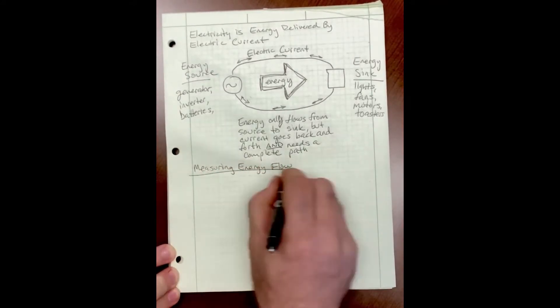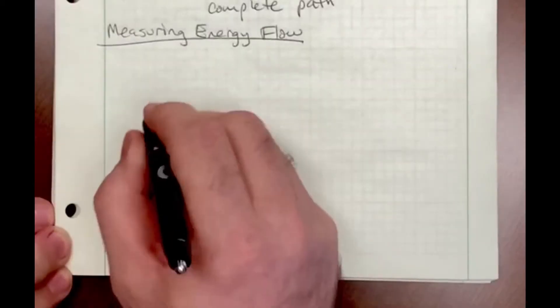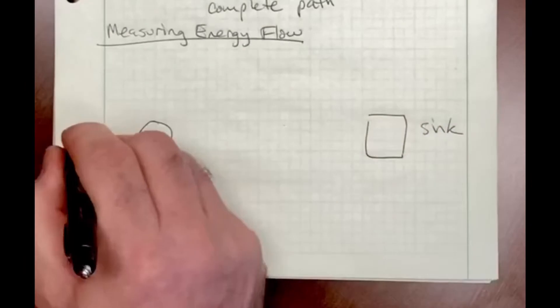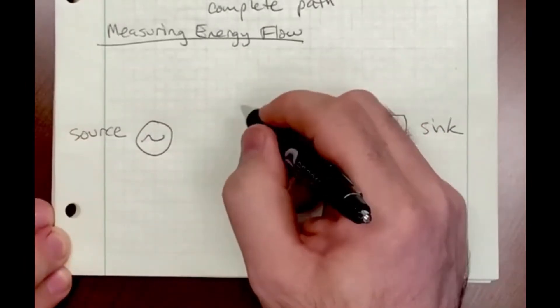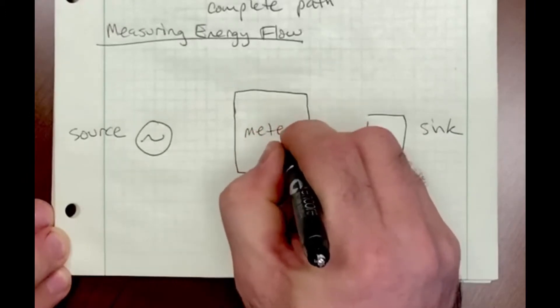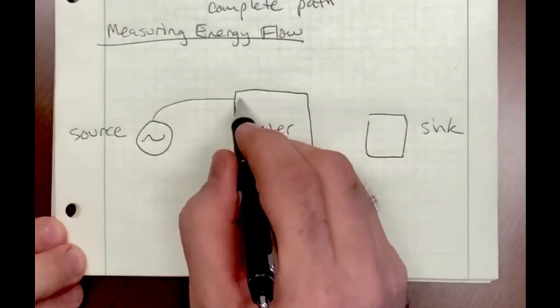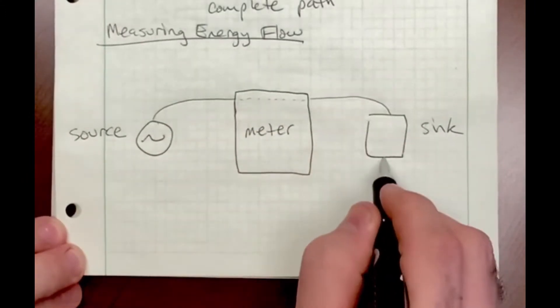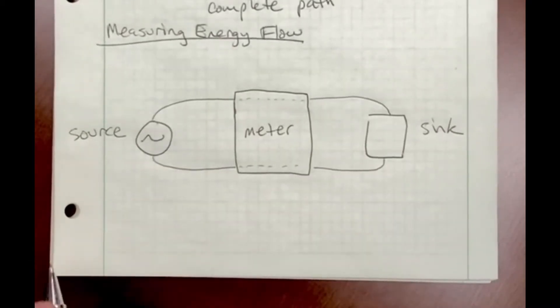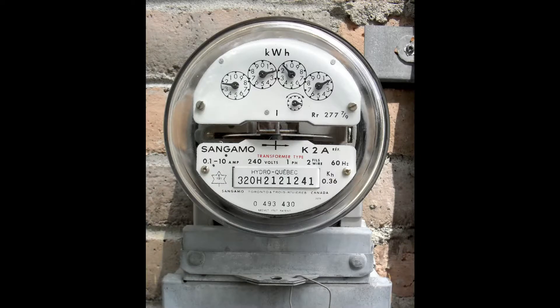How do we measure this energy flow? I'm going to redraw the source and sink now, but I'm going to put a meter in between them. This is an energy meter, and we're going to run the two wires through that meter so they can measure both the voltage and the current.